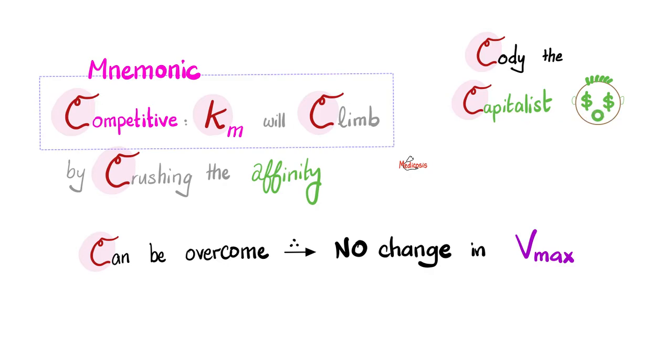Cody, the capitalist, is a competitive inhibitor. Km will climb upwards because affinity was crushed downwards. Can you overcome it? Yes, you can. That's why there is no change in Vmax. You can say that Vmax will remain constant.